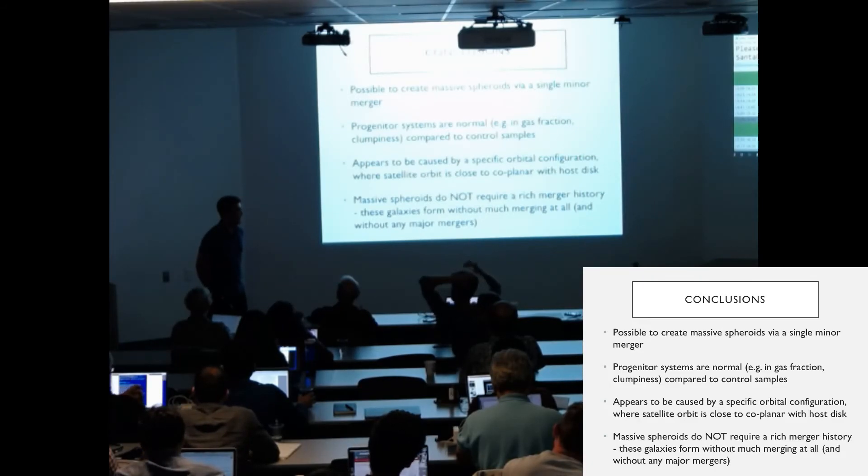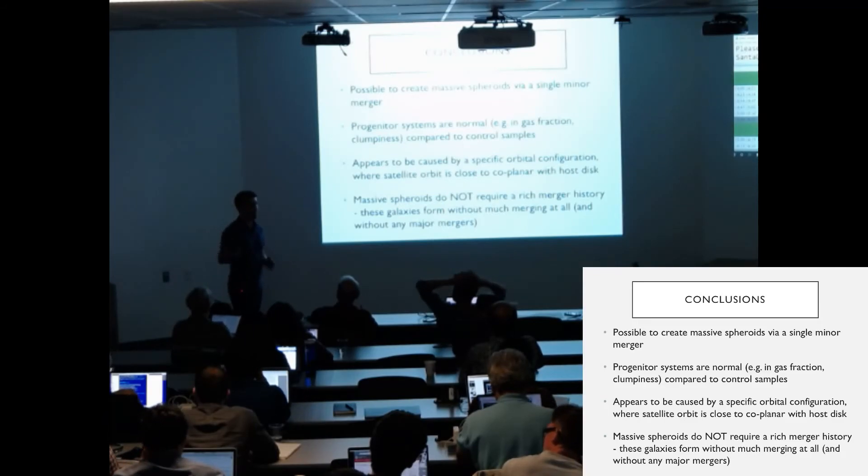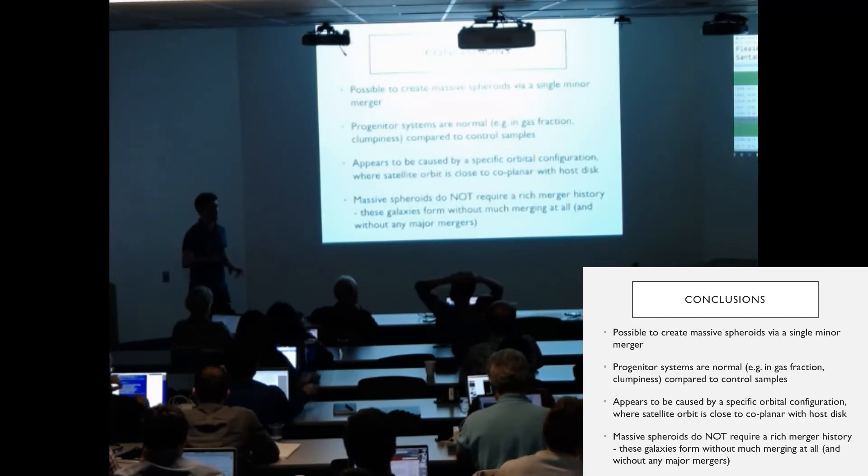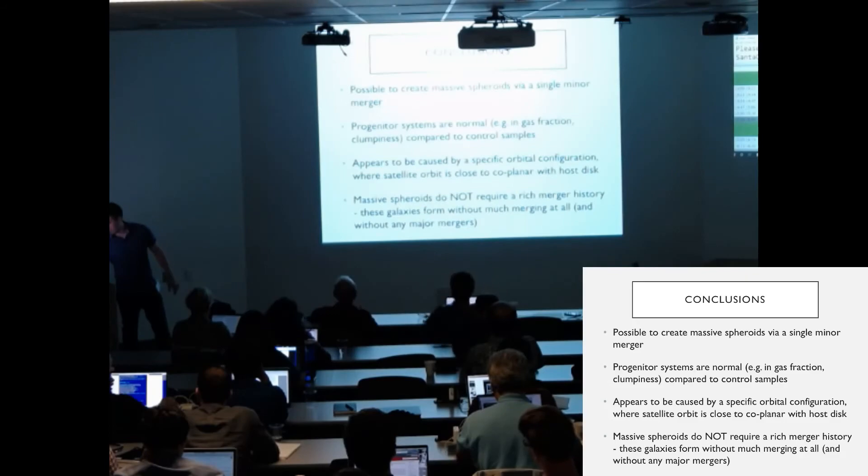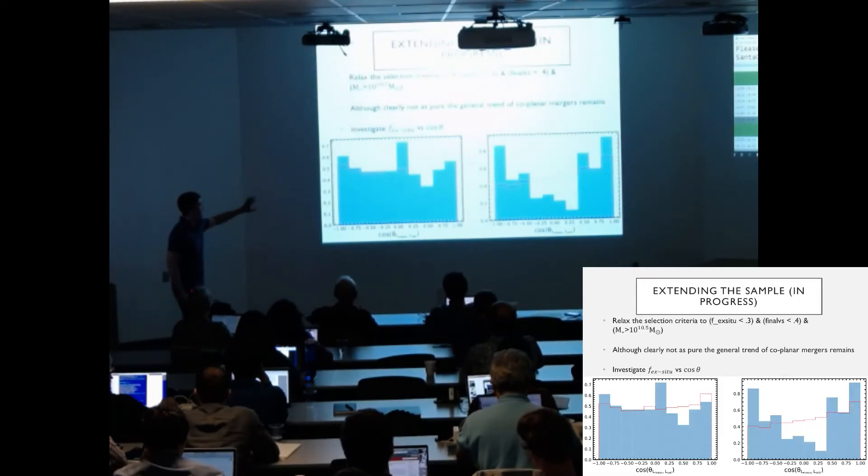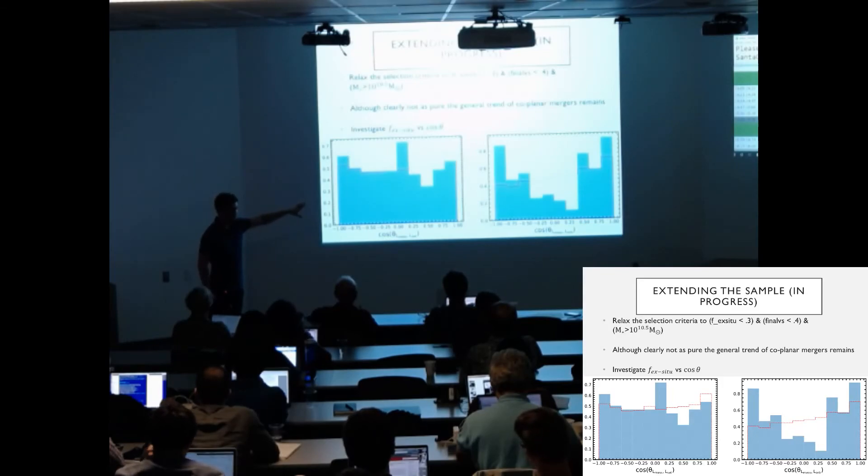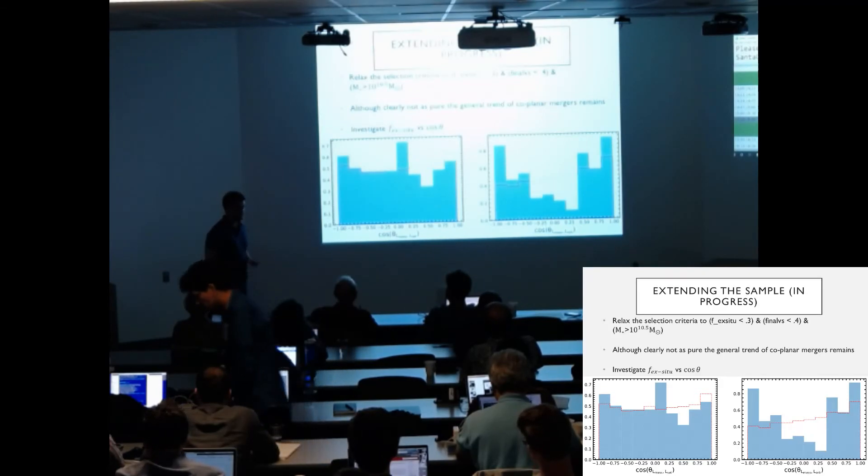Yeah, so it's about, if you take the massive spheroids, so anything above 10 to the 11, it's about 5% of those galaxies. That's the strict selection criteria. So if we, I'm going to investigate this further, but relaxing the criteria slightly, this is now a sample of 200 galaxies. So it might be more than 5%, but 5% is what we're seeing at the moment, for sure.